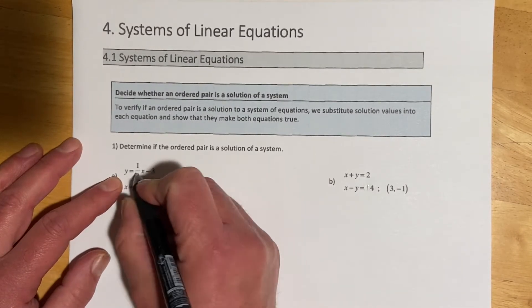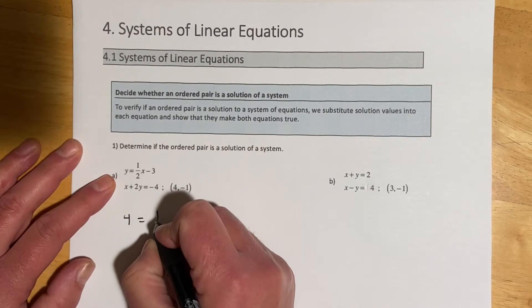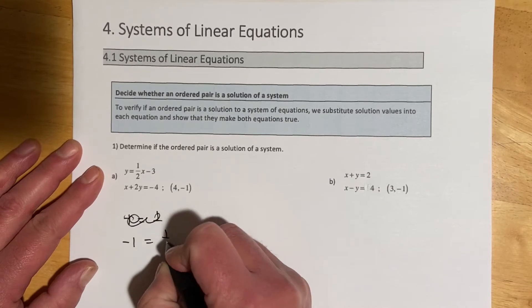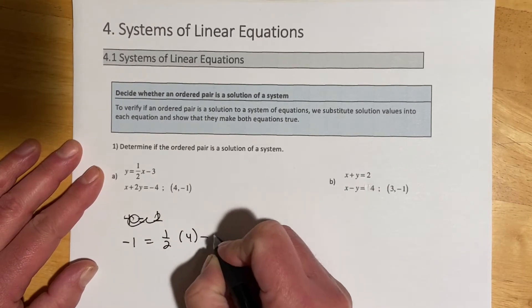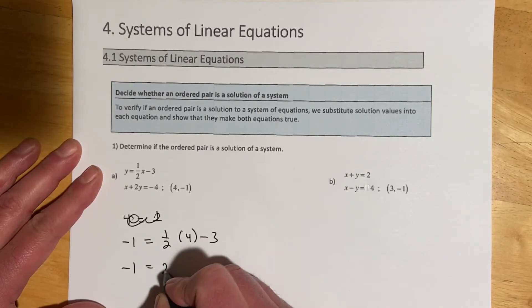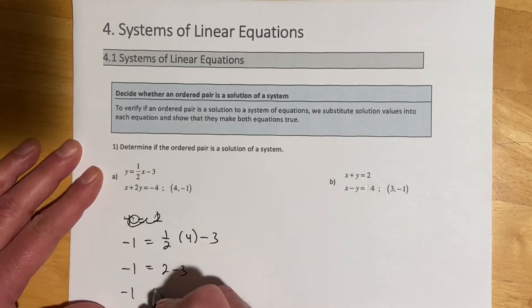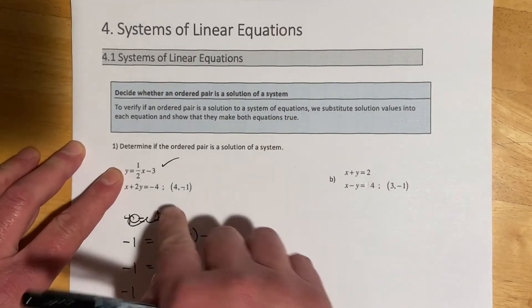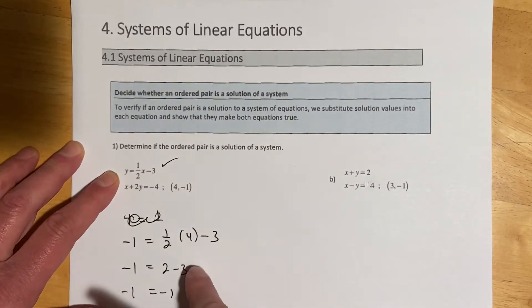So if I put 4, negative 1 in here, I get 4 equals, I do not get that, I get negative 1 equals 1 half of 4 minus 3. So negative 1 equals half of 4 would be 2 minus 3. So negative 1 equals negative 1. So this point works for this line.